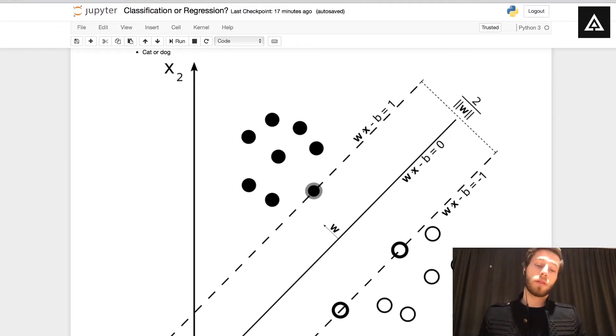So everything on the left, depending on how you see it, on top of this line at least, on this side of the line is one kind of class and on the other side of the line is a different class.